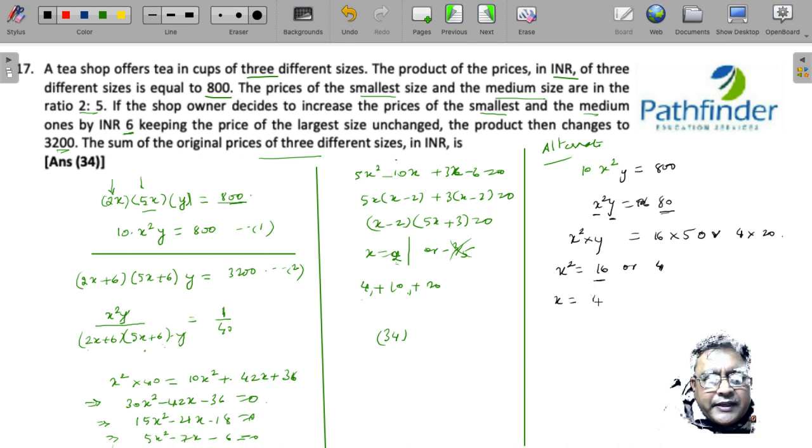If you plug the value of x as 4, you will get three prices as 4×2 = 8, 4×5 = 20, and the third price is 5. This is not possible because the third price has to be maximum, so you can ignore this. So the only possible value of x is 2. So you get the three prices as 4, 10, and 20.